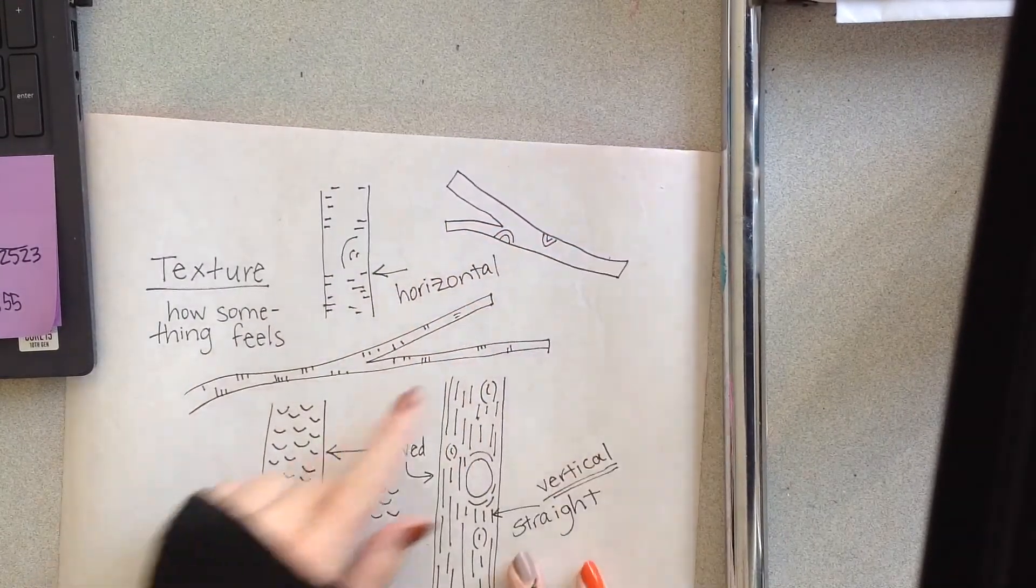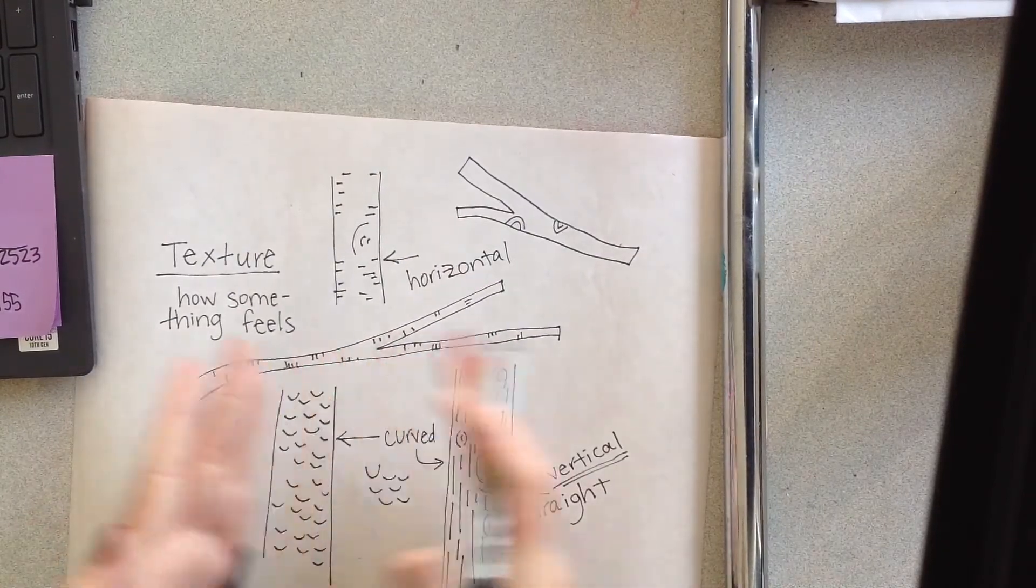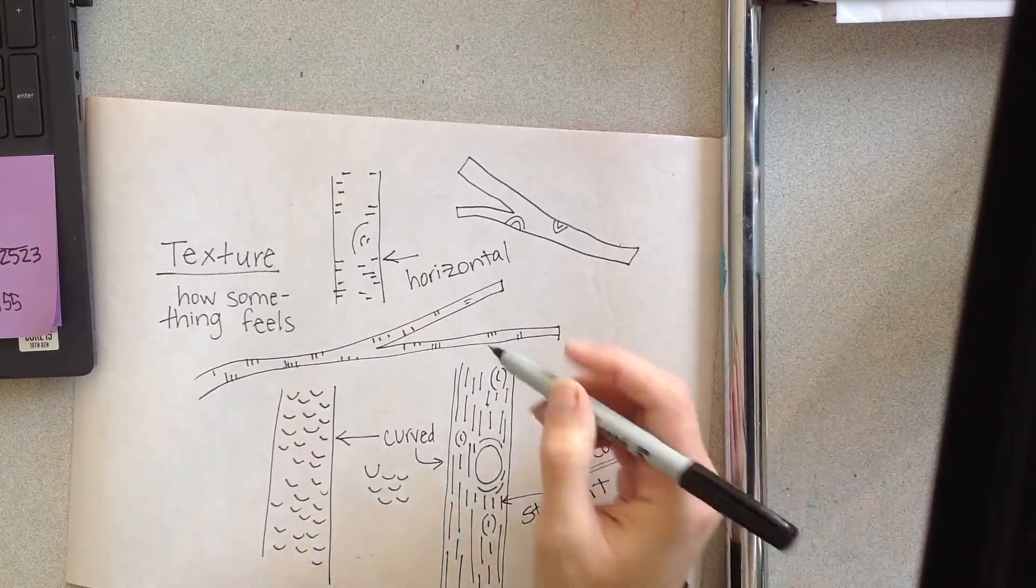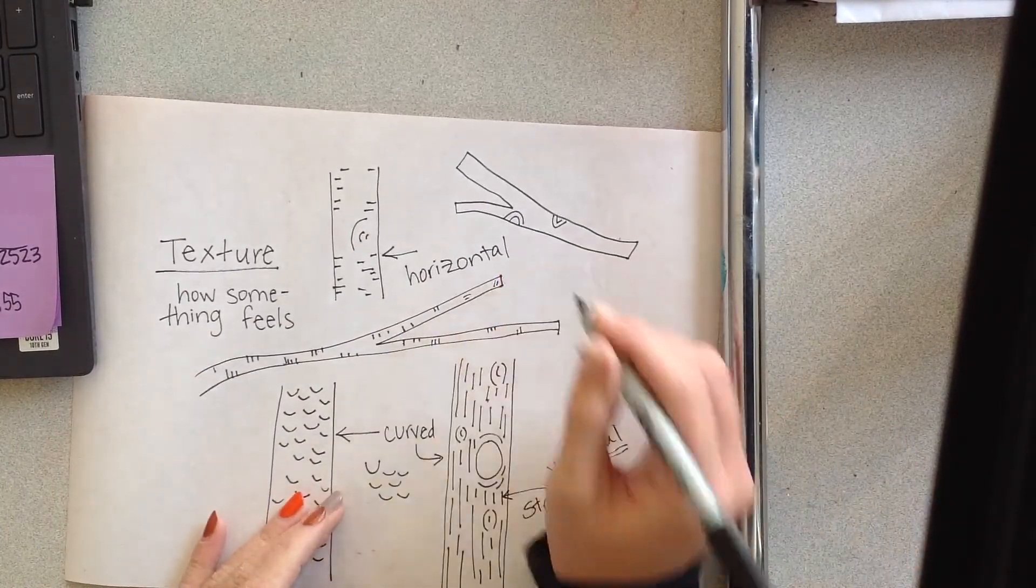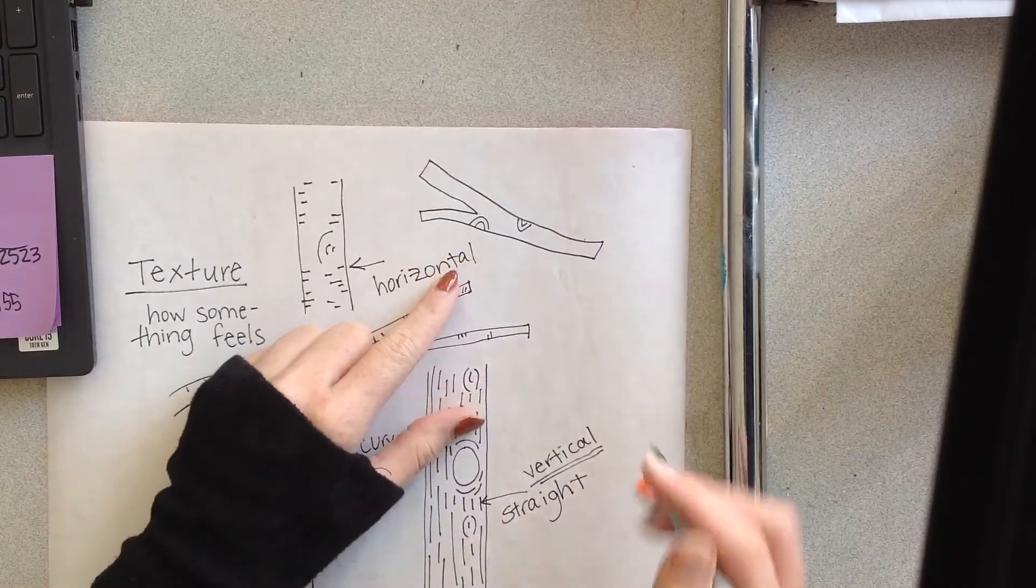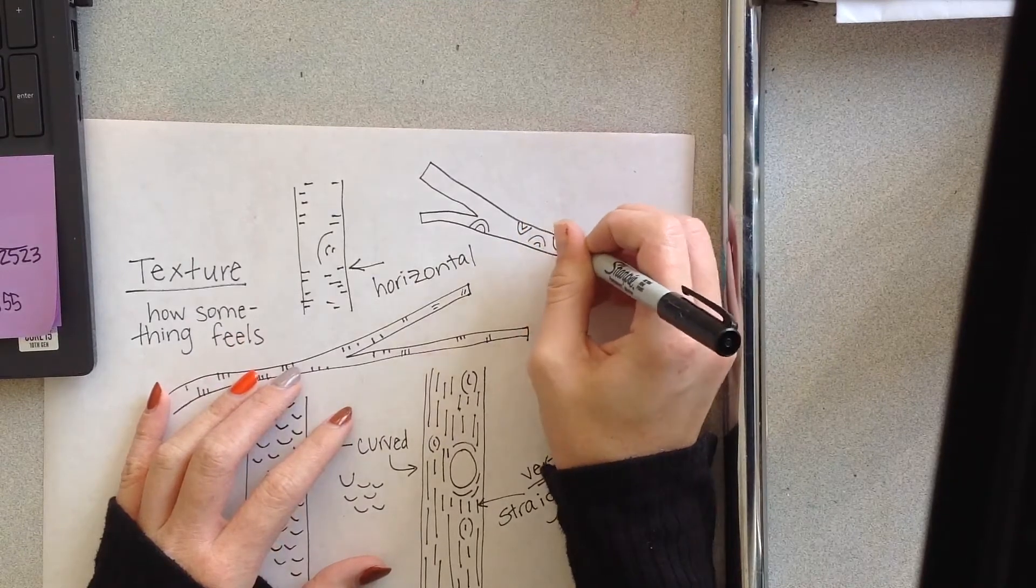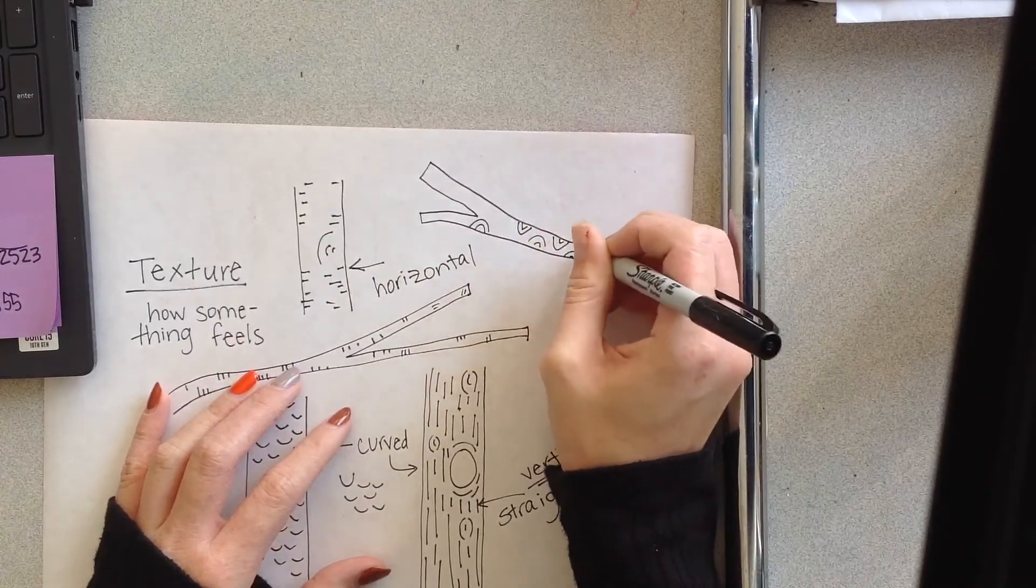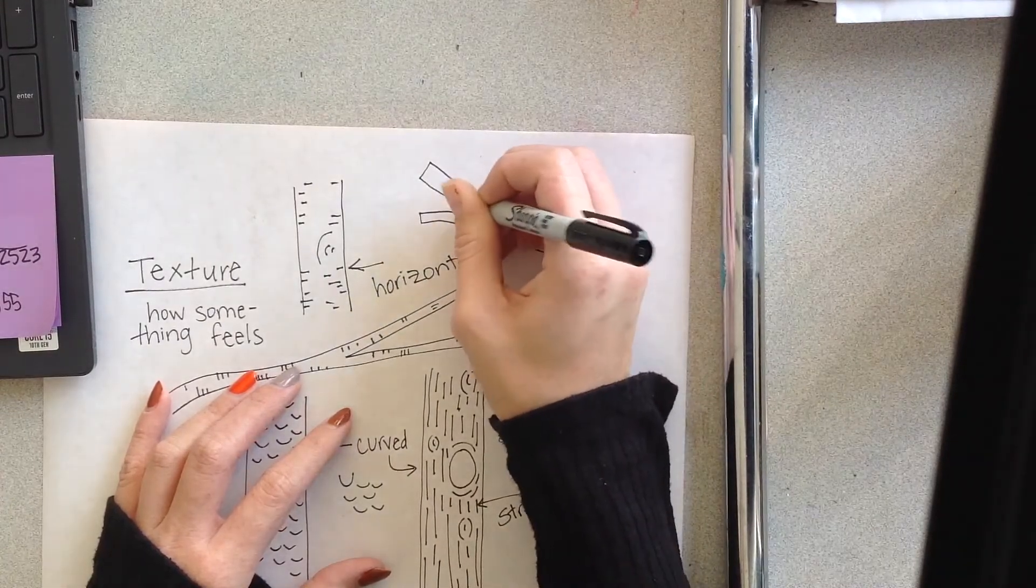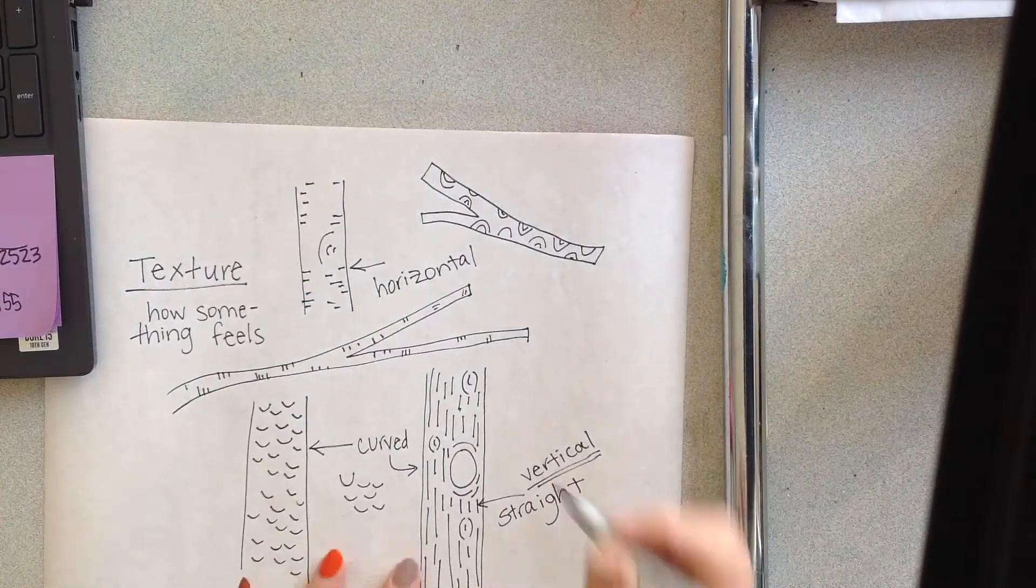And then I noticed on branches there were different tiny little vertical lines or horizontal lines, sometimes even a little bit diagonal, and they were very, very tiny. And then on other branches I noticed more curved lines. So you guys can have so much fun with choosing your textures for your trees and branches.